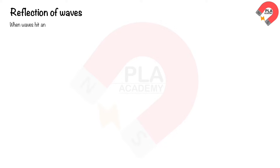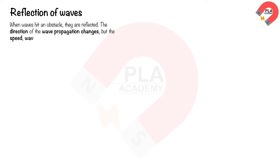Reflection of waves. When waves hit an obstacle, they are reflected. The direction of wave propagation changes, but the speed, wavelength, and frequency remain constant.